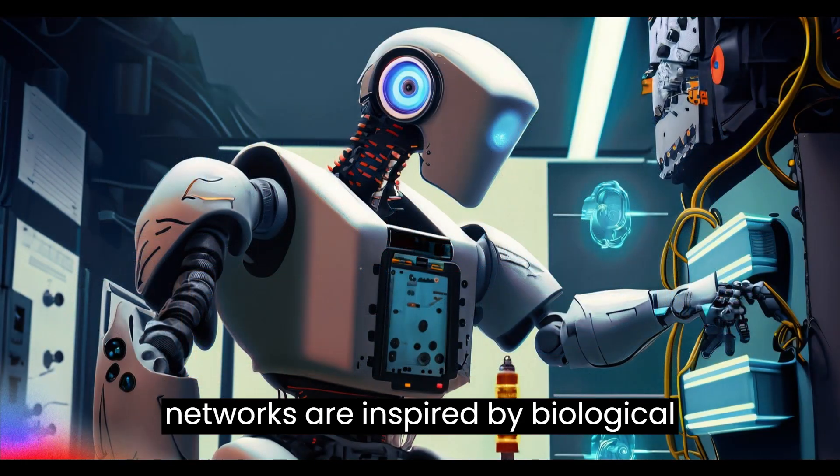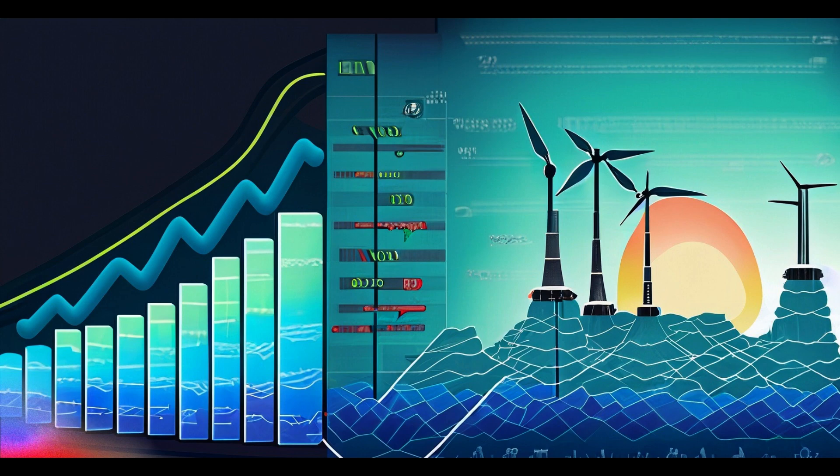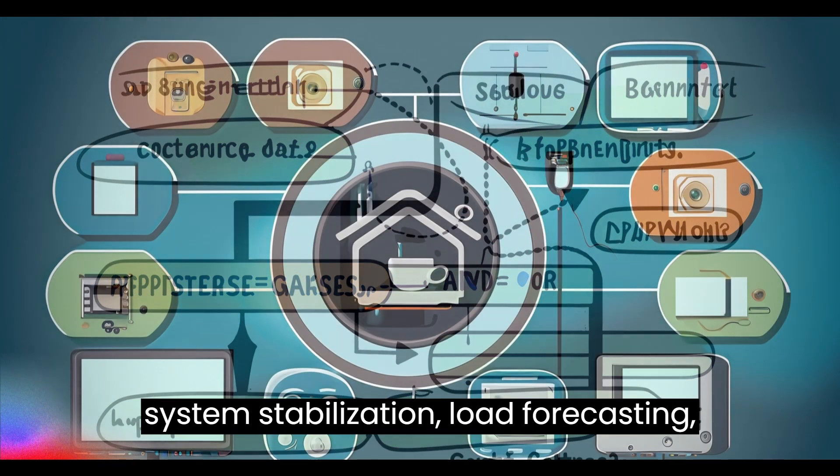Neural networks are inspired by biological neurons and can learn from data. They are used for things like power system stabilization, load forecasting, and more.